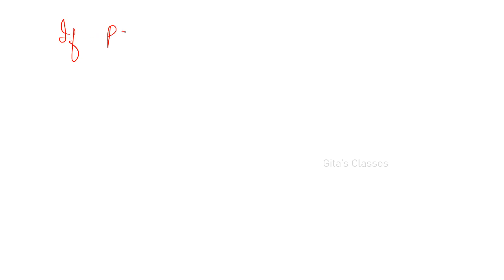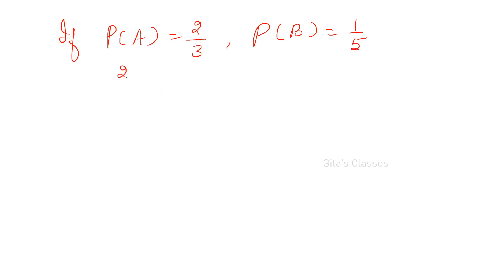Now I'll do some problems from previous year questions — whichever are straightforward. One question: if P(A) = 2/3 and P(B) = 1/5, prove that −2/15 ≤ P(A∩B) ≤ 1/5.